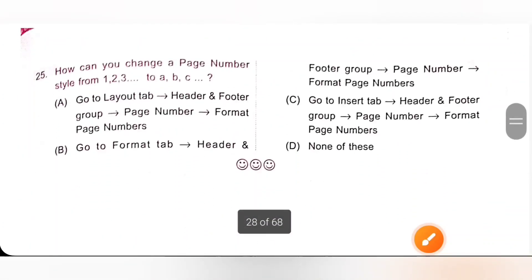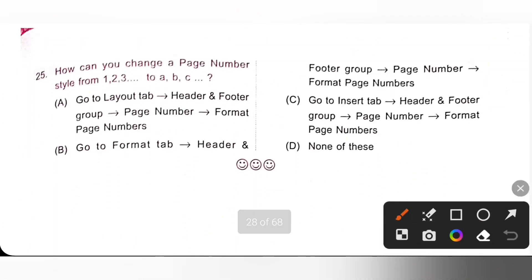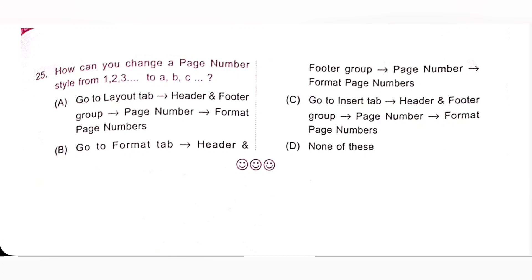Last one: How can you change a page number style from 1, 2, 3 to A, B, C? To change a page number style from 1, 2, 3 to A, B, C, we have to go to Insert tab, then select Header and Footer group, Page Number, and then Format Page Numbers. Option C is the correct answer.